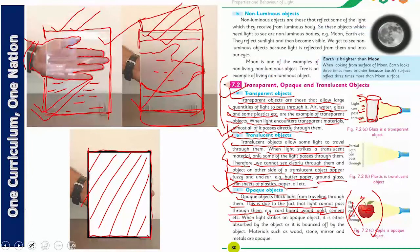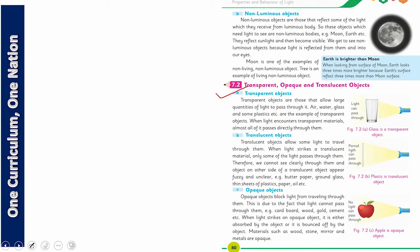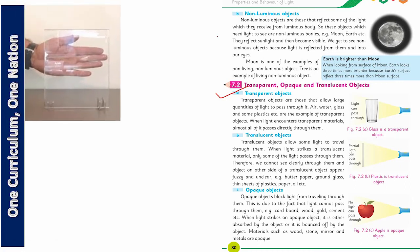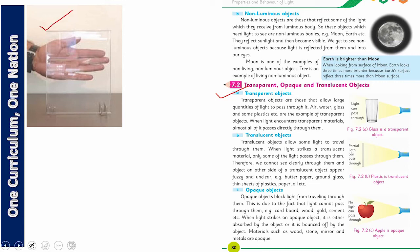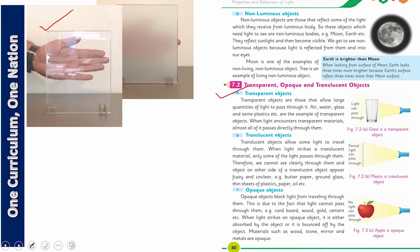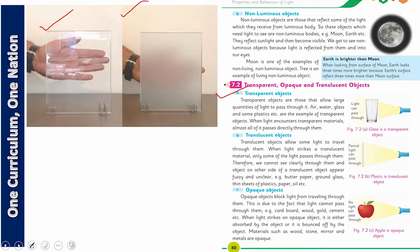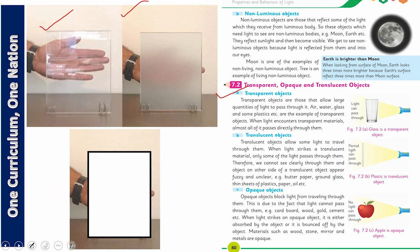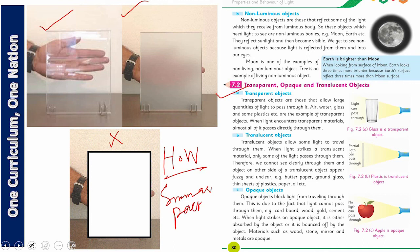So once again, dear students — transparent objects are those through which all light rays pass and whatever is behind them is clearly visible. Translucent objects allow some light to pass but not all, and we cannot see clearly behind them. Opaque objects totally block light rays — nothing can be seen through them. Now take out your summer pack and complete the homework. Best of luck, dear students. Allah Hafiz.